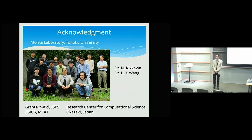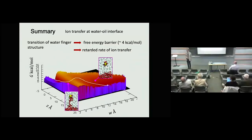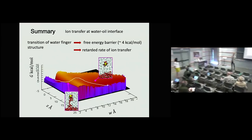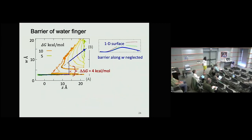Thank you for this very interesting talk on ion transport at interfaces. We have some discussion from the audience. The first question: W is your bottleneck distance — the graph-theoretical bottleneck. How exactly did you implement that with respect to biasing along that coordinate for your 2D potential of mean force?